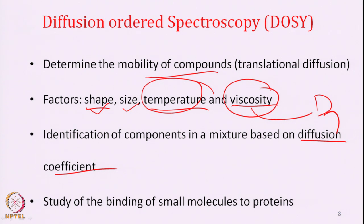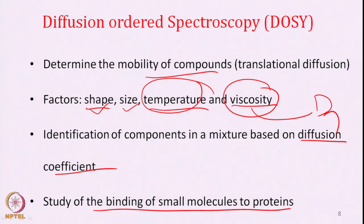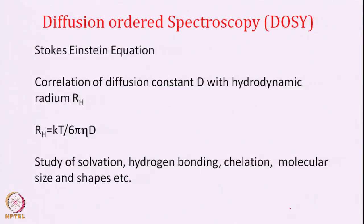In the last class we looked at line shape changes, STD concepts, and T2 relaxation time changes. Similarly, diffusion can also change upon binding. Suppose a molecule is diffusing very fast; when it binds a macromolecule, its effective size increases and it can diffuse very slowly compared to before. So diffusion can also be used for binding of a small molecule to a protein. If you have a mixture of 4–5 compounds, you can find out which are binders and which are non-binders by simply recording a DOSY experiment.